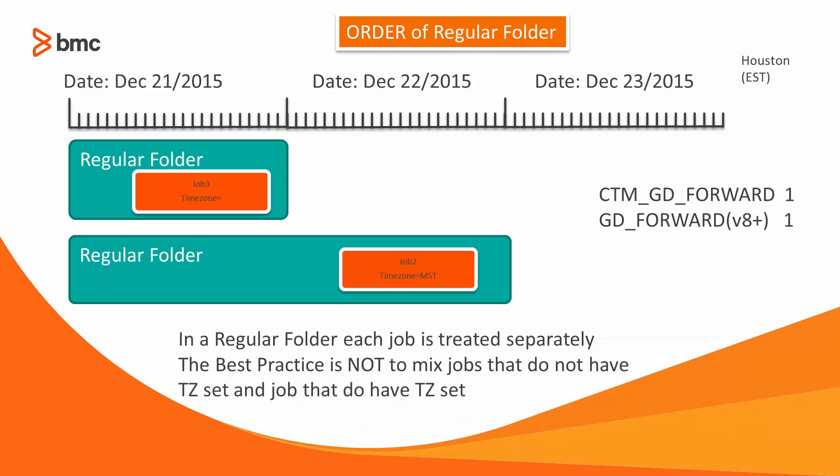The next example is a regular folder. One job in this folder has no time zone specified, and at new day of the 21st of December, it is ordered with O-Date of the 21st. A second job in the same regular folder is forward ordered for the 22nd because it has the time zone field set.